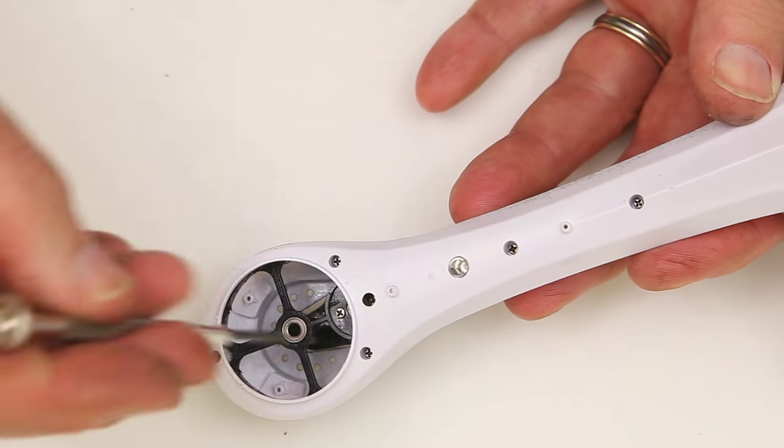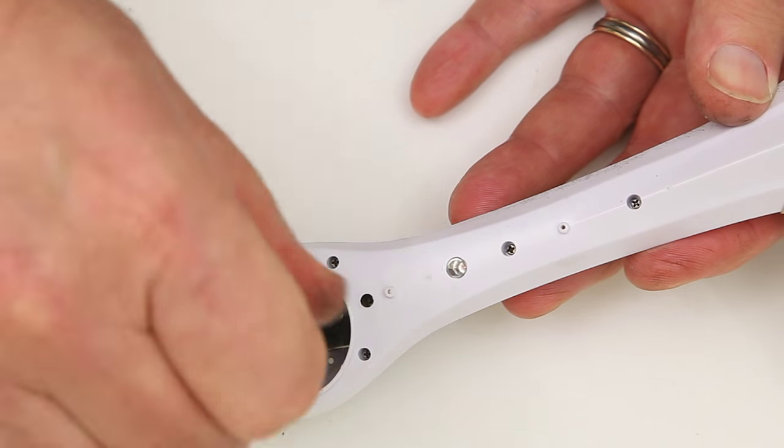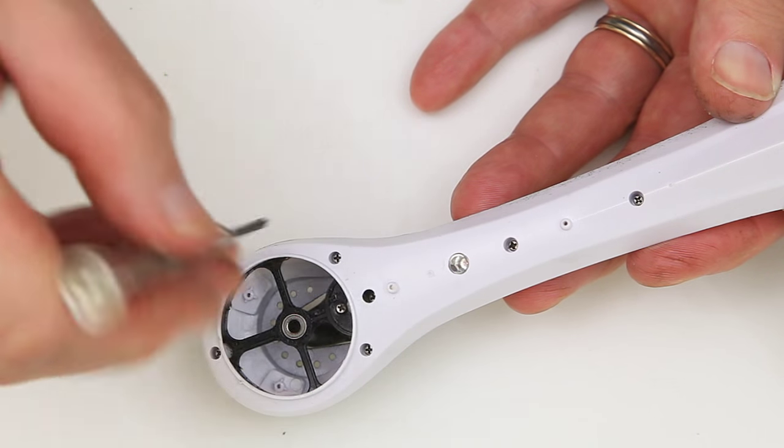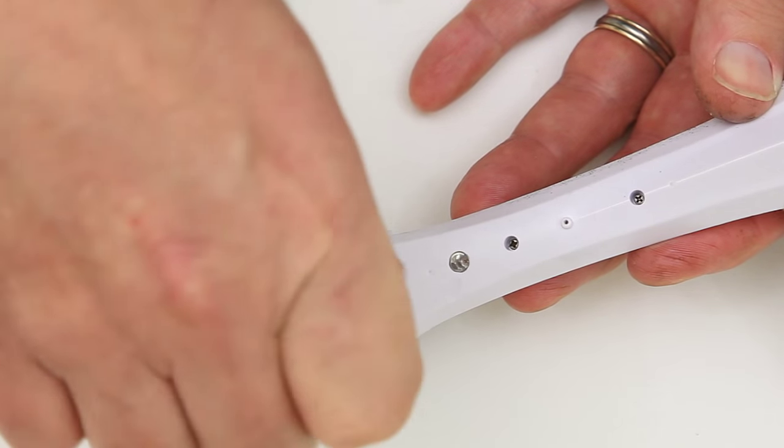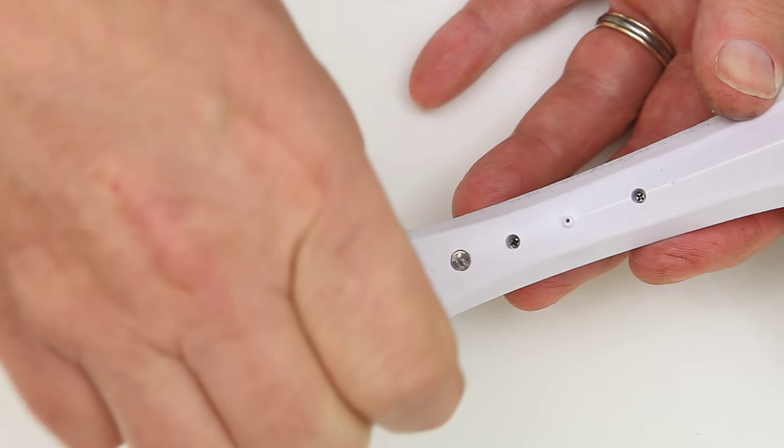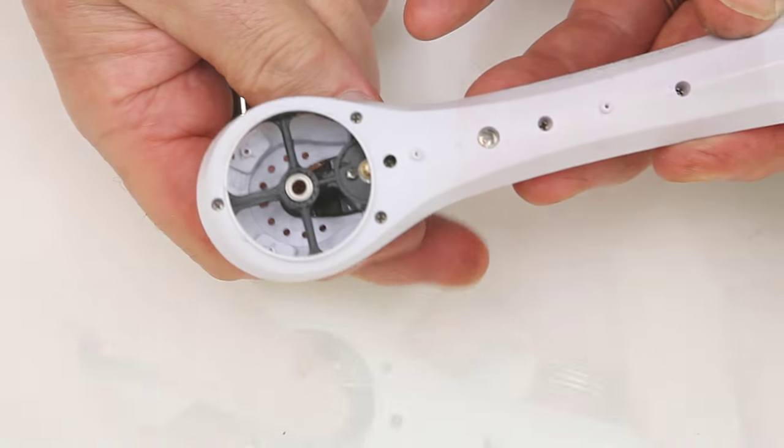We have these two screws under here to undo as well. We've got this one here. And then the thing I like about this is they've actually put a hole in the bodywork so that you can get to this one as well, which is rather good.